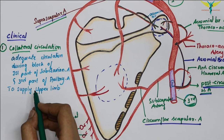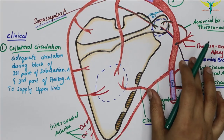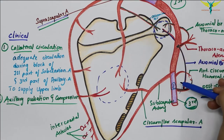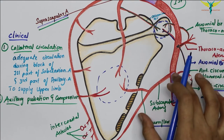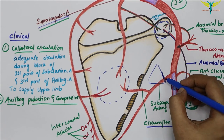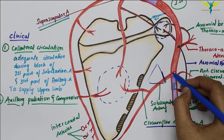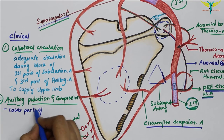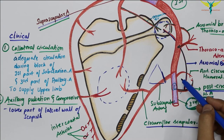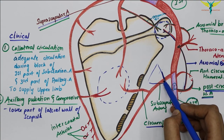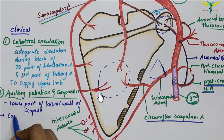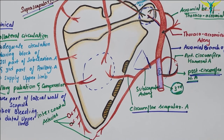The second clinical point is axillary pulsations and compression. The axillary artery's pulsation can be felt in the lower part of the lateral wall of the axilla. The axillary artery can also be effectively compressed against the lower part of the lateral wall of the axilla to control bleeding from the distal part of the upper limb.